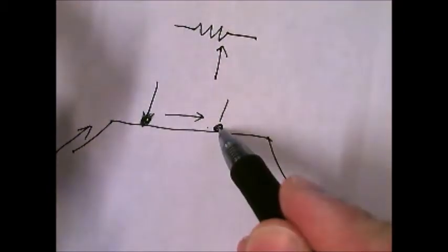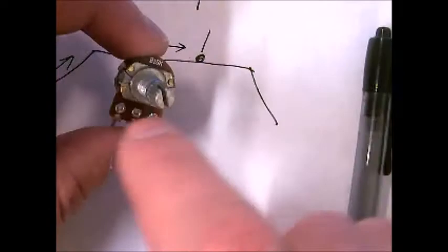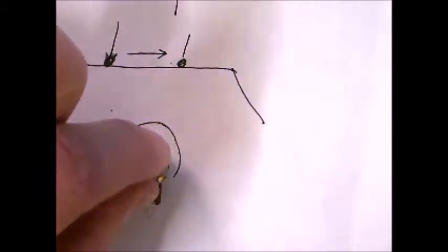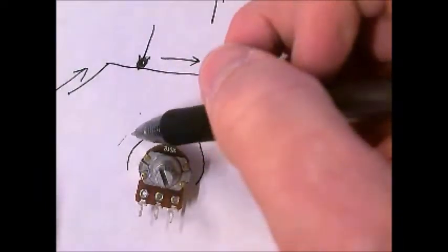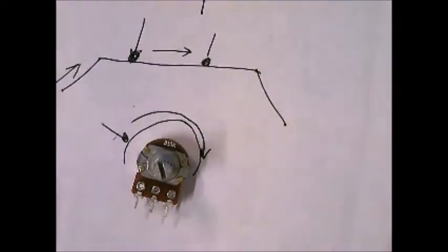You increase the resistance by moving up here, then you decrease it by moving it down here. So in the case of this potentiometer, you can imagine the resistor as being around the circumference like this, and then you're moving the slider around it like this. That's basically what is happening.